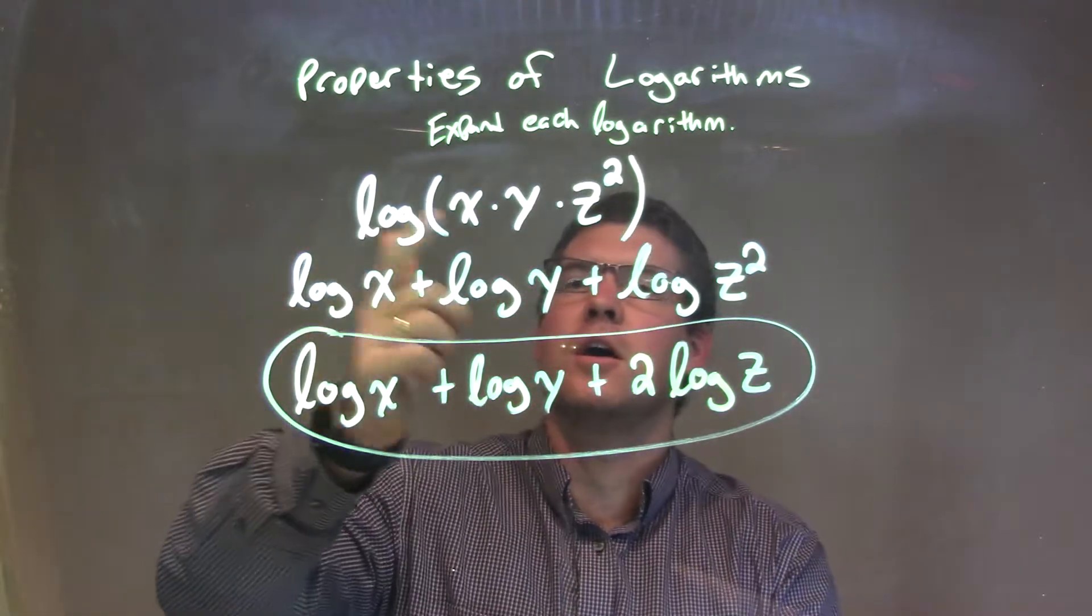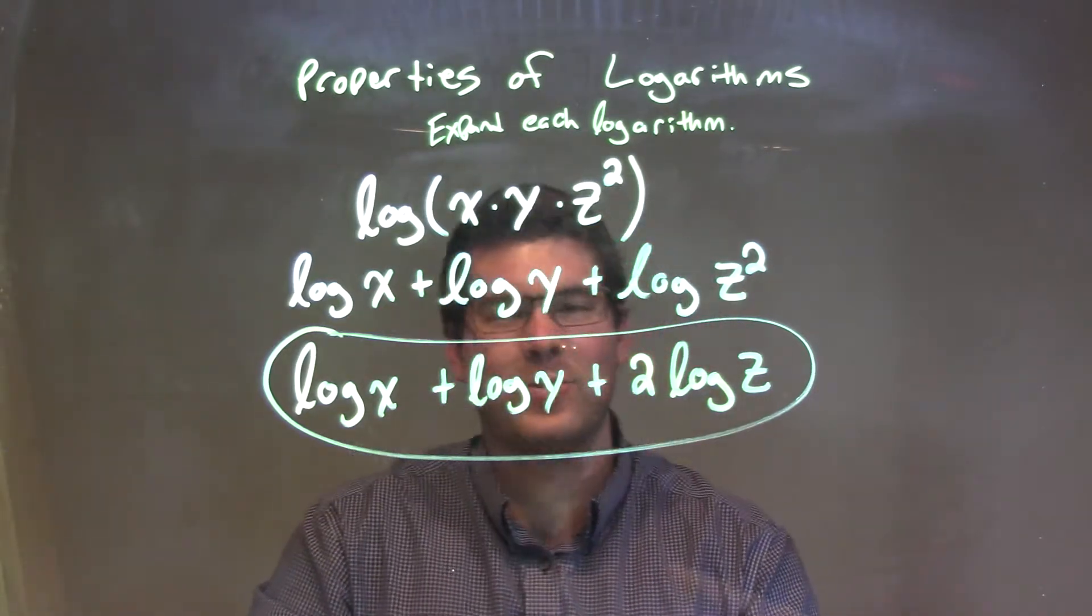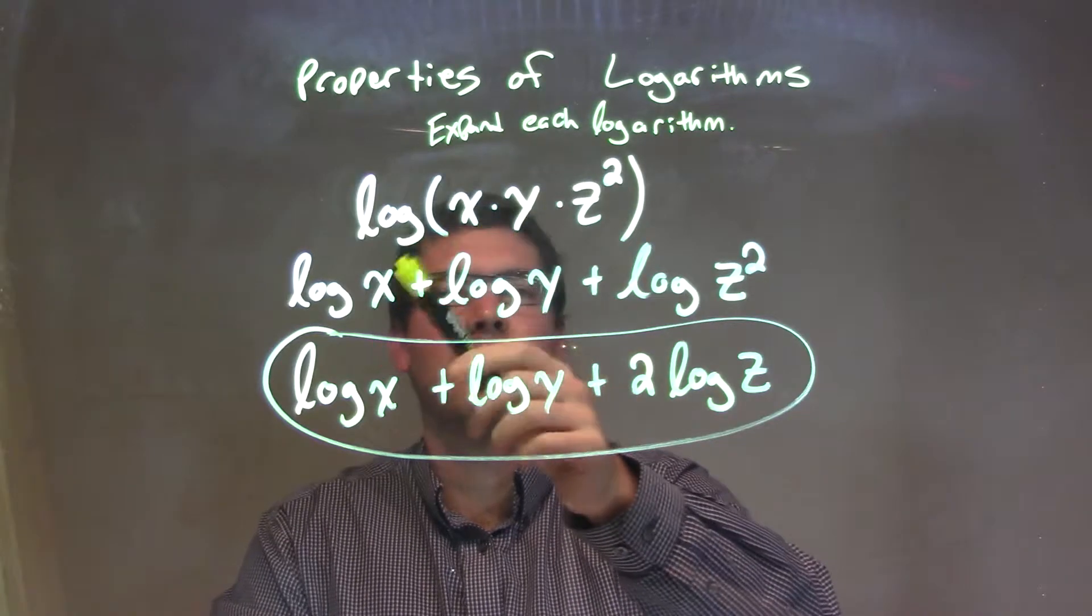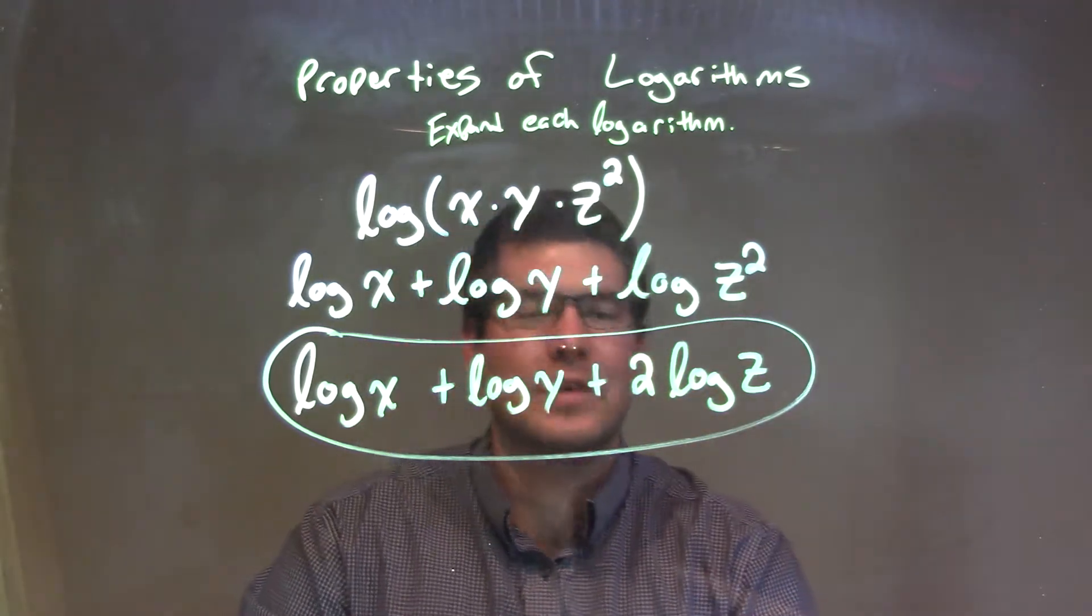So let's recap. We're given log of x times y times z squared, not all squared, z squared. Well, we can expand the multiplication to be log of x plus log of y plus log of z squared.